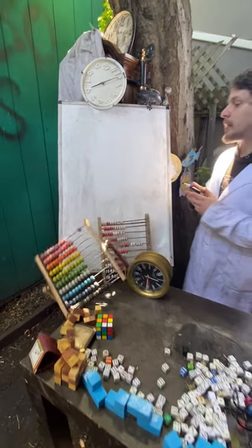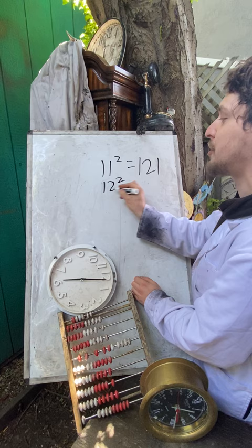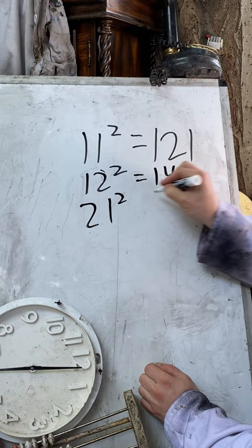You've probably seen that 11 squared creates a palindromic number that's its own reverse. But have you noticed that 12 squared compared to 12 reversed, 21 squared, create numbers that are each other's reverse?